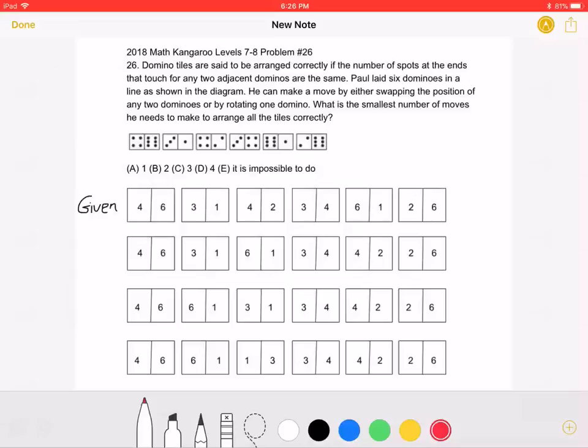He can make a move by either swapping the position of any two dominoes or by rotating one domino. What is the smallest number of moves he needs to make to arrange all the tiles correctly?